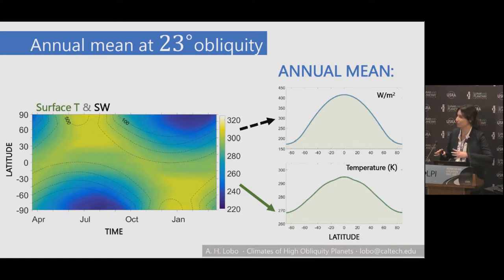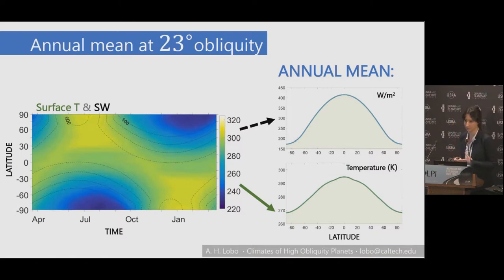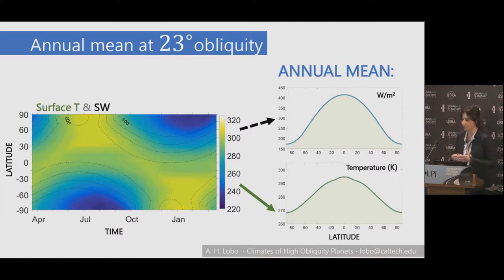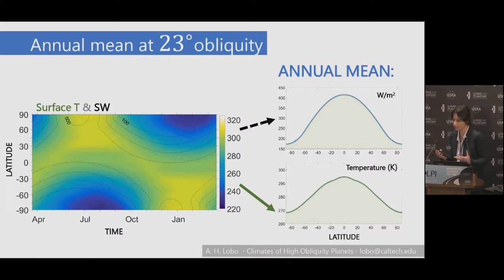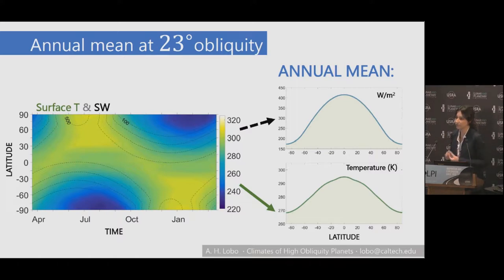I'll give you a tour of the 85-degree planet. One of the things I wanted to showcase is really the importance of seasonality when considering these planets, which may seem counterintuitive because most of the time we're happy if we can get an annual mean planetary picture of what the planet looks like. But for these high-obliquity planets, you do need to take into account the seasonality even for the annual mean conditions.